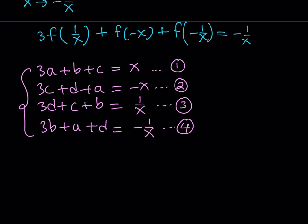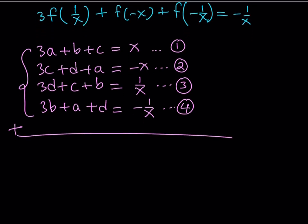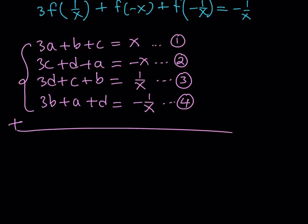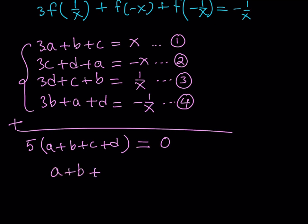Now I'm going to add all four equations together. Adding gives 5a + 5b + 5c + 5d, which is 5 times (a + b + c + d), and the right-hand side equals zero because x and negative x are opposites, and 1 over x and negative 1 over x are opposites. So their sum is zero, which means a + b + c + d = 0.